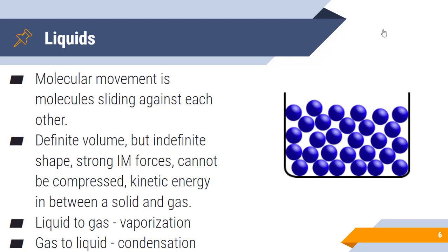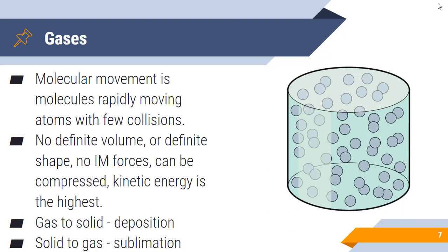A couple more phase changes: liquid to gas is vaporization, and gas to liquid is condensation. In gases, the molecules are rapidly moving atoms with very few collisions because those molecules are so far apart that they very rarely interact with one another. That allows them to move much more rapidly and in straight lines. Gases have no definite volume or shape, which means they have the ability to be compressed, like a tank of propane. There are no intermolecular forces present between gas molecules because they are so far apart, and the kinetic energy is the highest.